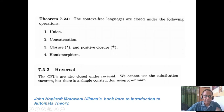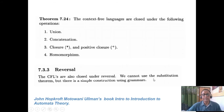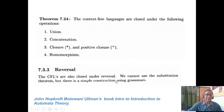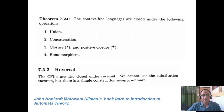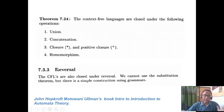All languages are closed under homomorphism — regular, context-free, context-sensitive. Homomorphism is replacing symbols, one-to-one or one-to-many, and that is always closed. Reversal: context-free languages are also closed under reversal. So if you reverse a context-free language, it is still context-free. Reversal is closed for all languages — not only regular grammar, but context-free grammar and context-sensitive grammar are all closed under reversal.